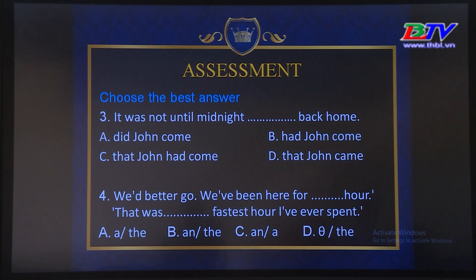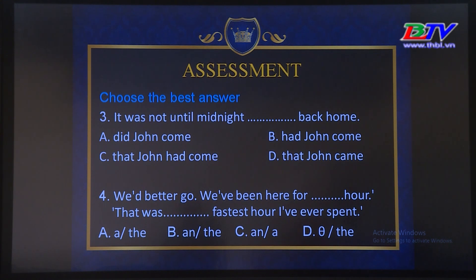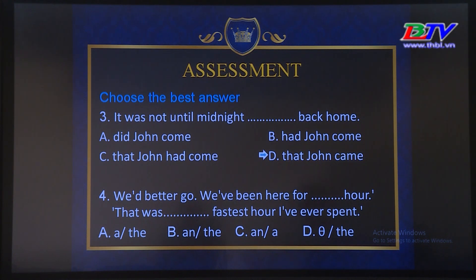Number 3: 'It was not until midnight ___ back home.' A. Did John come B. Had John come C. That John had come D. That John came. The answer is D — 'that John came.' Với cấu trúc 'it was not until', chúng ta cộng với một mốc thời gian, cộng thêm từ 'that', sau đó là chủ ngữ cộng với động từ dạng 2 hoặc verb + -ed.